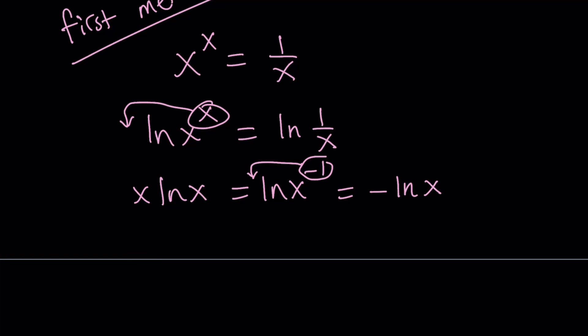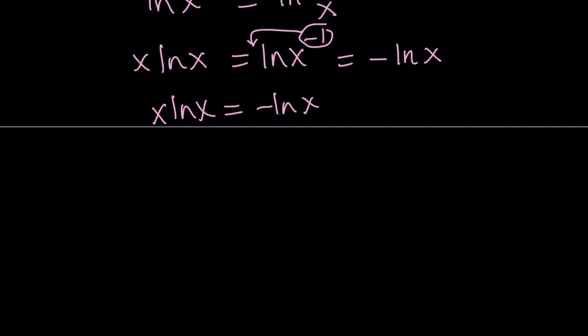We have now the following equation. x ln x equals negative ln x. I'm going to go ahead and add ln x to both sides. That's going to give me x ln x plus ln x equals 0. So now we have an equation that is equal to 0, which is pretty good because almost all the time you want your stuff to equal 0. It's easier to solve somehow.